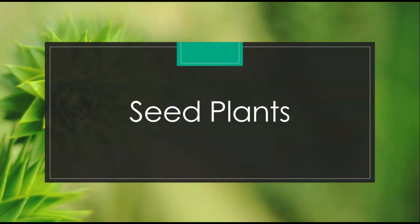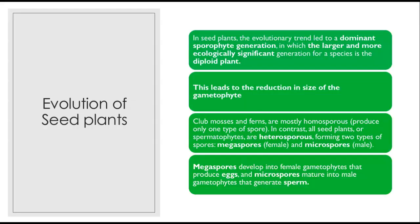Before we get into the gymnosperms, let's talk about how seed plants evolved. In seed plants, the evolutionary trend leads to the dominant sporophyte generation — the diploid plant — in which the larger and more ecologically significant generation is the diploid plant. This leads to the reduction in size of the gametophyte.